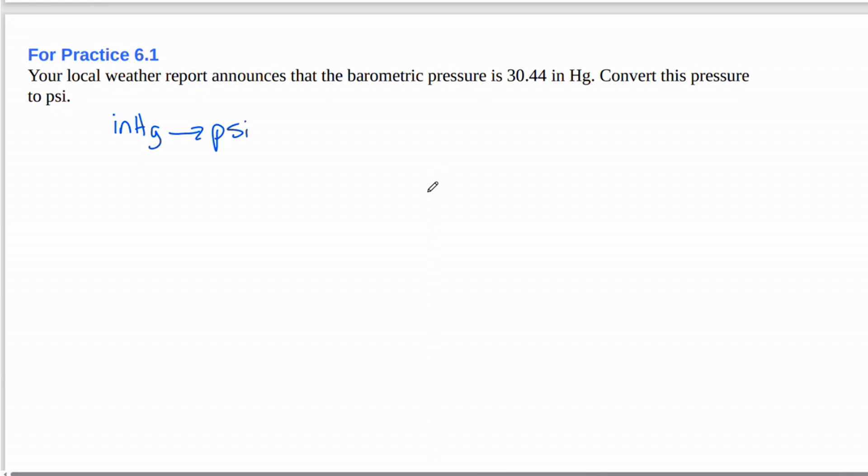Let's see what information we know. So if you look at table 6.1, you'll see that one atmosphere is equal to 29.92 inches of mercury and 14.7 PSI is equal to 1 atmosphere. So now we can set up our problem.